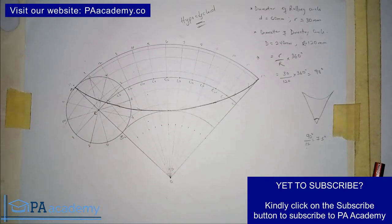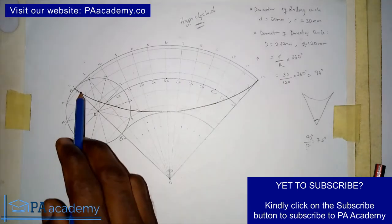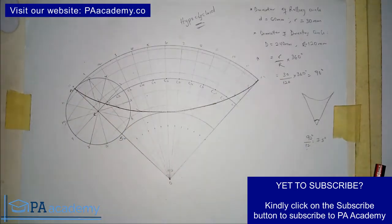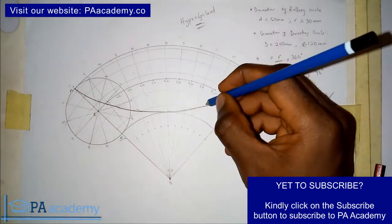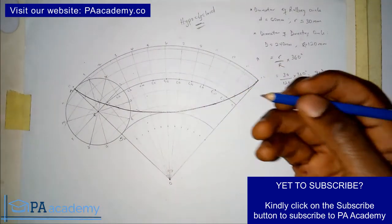In drawing a tangent and normal to a hypocycloid, first we're going to pick a point where we want to have our tangent on this particular curve. We can pick any point. Let's say I want to pick this point. Let me call that point Y.